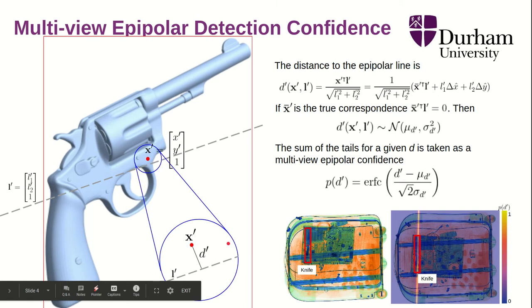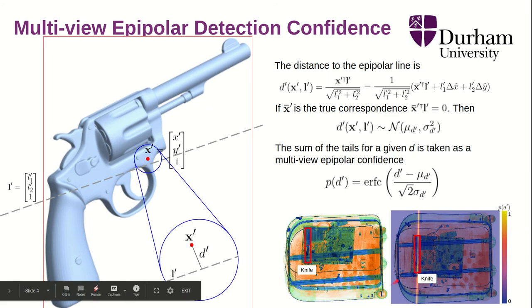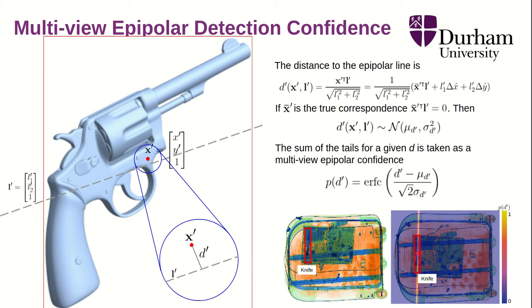After estimating F, we can obtain epipolar lines. Since we modeled the centroids as true correspondences plus an error, they will be slightly deviated from the epipolar line. We can model this distance using the point-to-line equation and expand it using the previous relationship. Since the true correspondence must align on the epipolar line, it vanishes from the equation, leaving only the sum of two normally distributed errors, which can be modeled as a normal distribution. We then define a multi-view epipolar confidence: given a distance to the epipolar line, we model it as the sum of the tails for that distance. As shown in the image, given a bounding box in one view, we obtain an epipolar line in the second view, and the confidence decreases for detections far from this line.